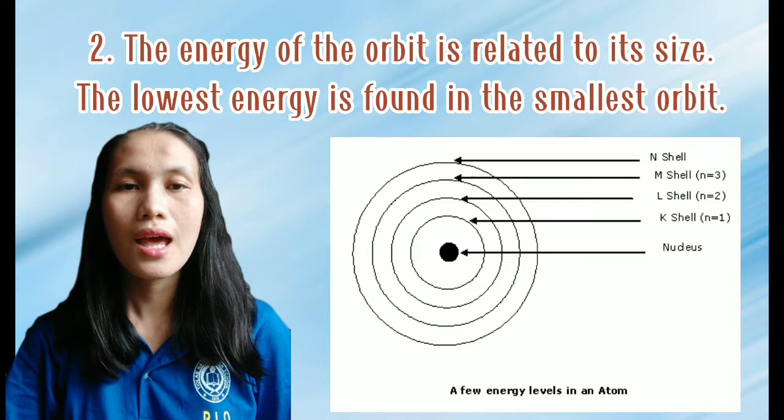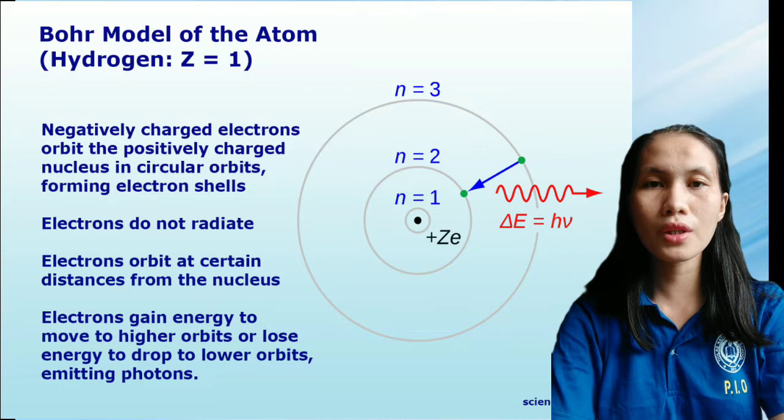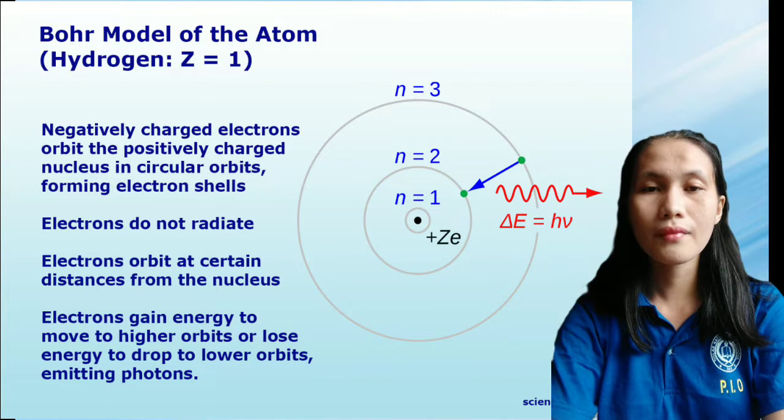radiation is absorbed or emitted when electrons move from one orbit to another. Here is a specific example of Bohr's model for the hydrogen atom or hydrogen-like ion, in which negatively charged electrons orbit a small, positively charged nucleus.